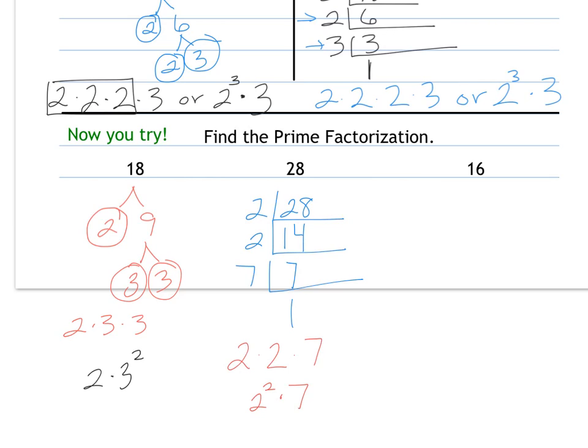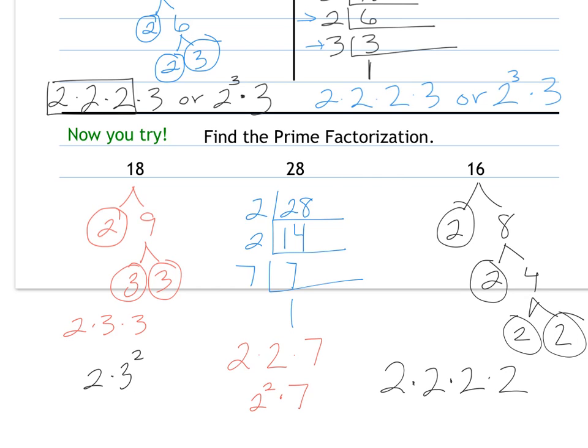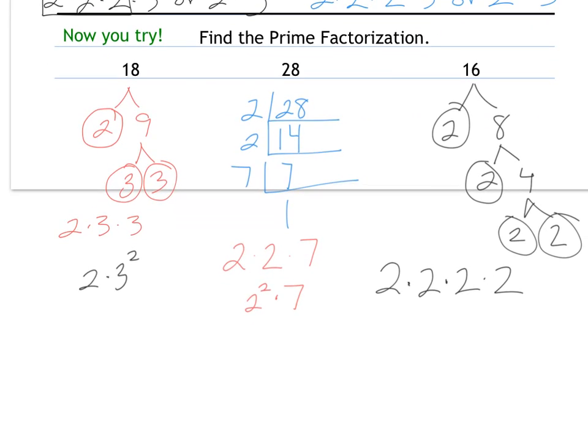One more, 16. Pick whichever method you think is best. 2 times 8, 2 times 4, and 2 times 2. This is 2×2×2×2. Since that is a product of the same factor, we can write that in exponential form as 2 to the 4th.